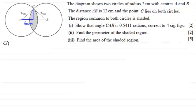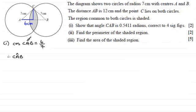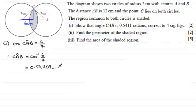Using the cosine ratio, the cosine of angle CAB equals the adjacent side (six) divided by the hypotenuse (seven), so cos(CAB) = 6/7. Therefore angle CAB equals the inverse cosine of six sevenths. Don't forget to put your calculator in radians mode — you should get 0.541109..., which to four significant figures gives 0.5411 radians.